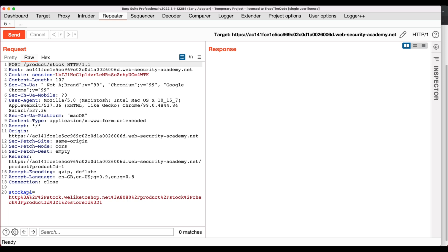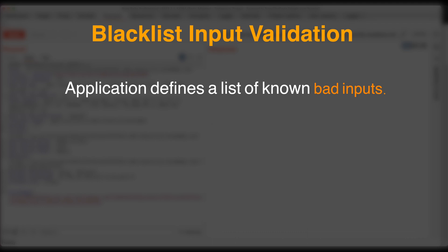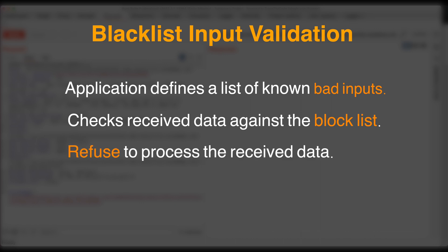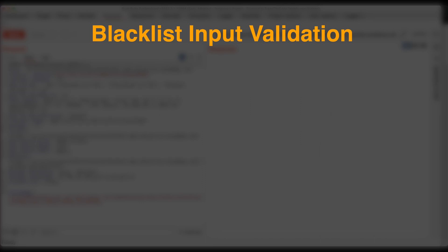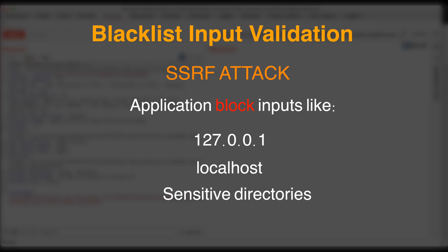Based on the lab description, we already know the application is using a blacklist input filter to prevent SSRF attacks. In the blacklist input validation approach, the application defines a list of known bad inputs. Whenever it receives user data, it checks that data against the list, and if it finds an exact match, the application refuses to process the data and denies access to the requested resources. For SSRF attacks, web applications normally block inputs containing hostnames that refer to the local machine, including the 127.0.0.1 IP address and localhost, as well as sensitive directories such as admin directories.